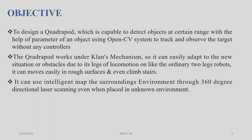The quadruped robot works under a clance mechanism, so it can easily adapt to new situations or obstacles due to its legs of locomotion, unlike an ordinary two-legged robot. It can move easily on a rough surface and even climb stairs. It can use intelligent mapping of the surroundings.